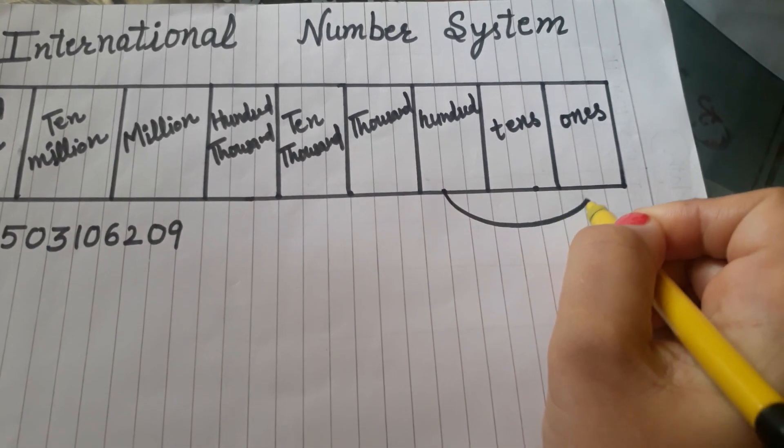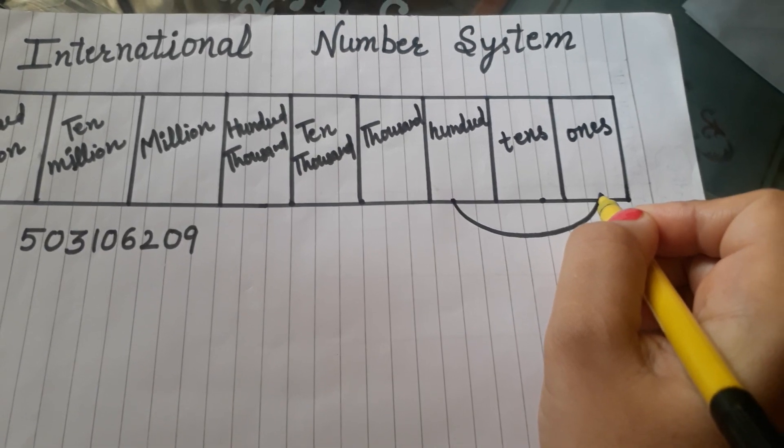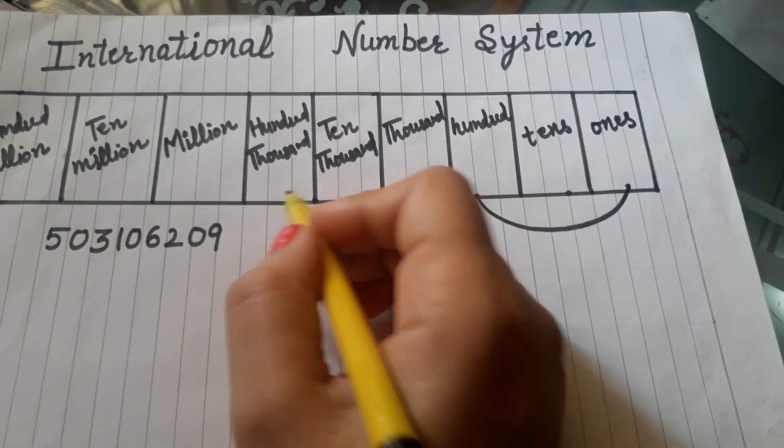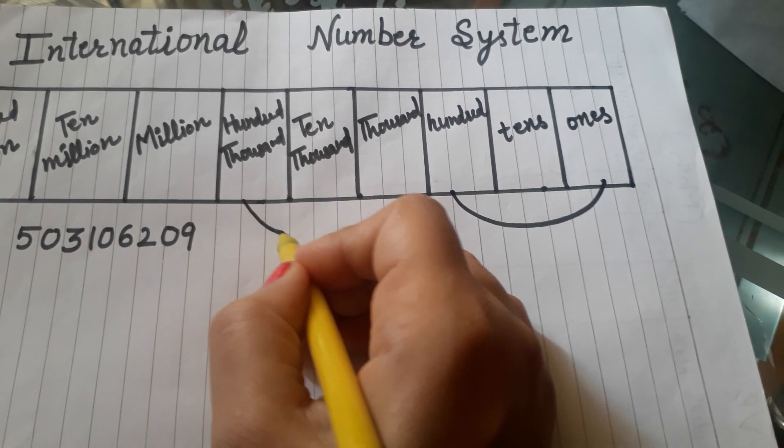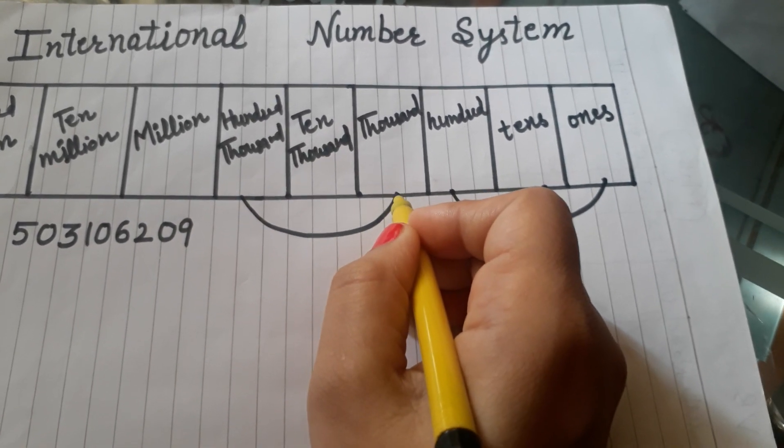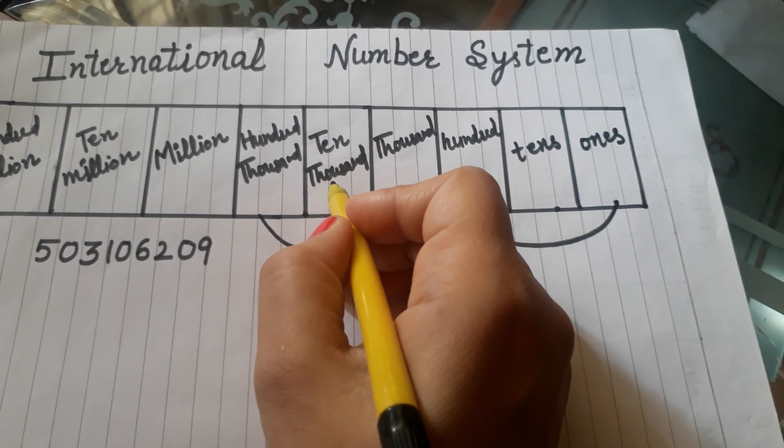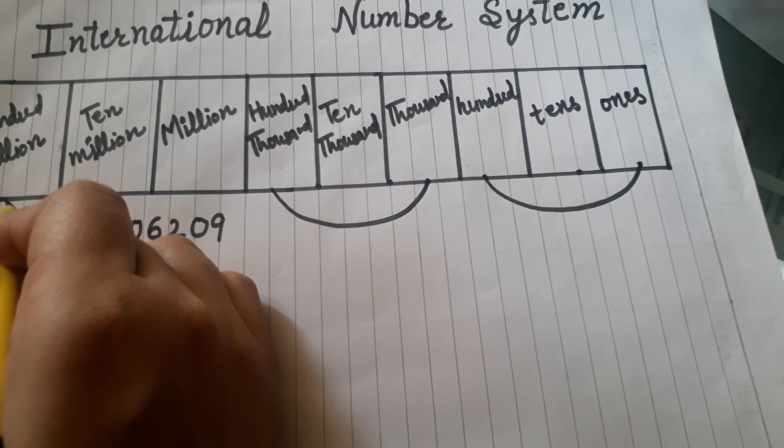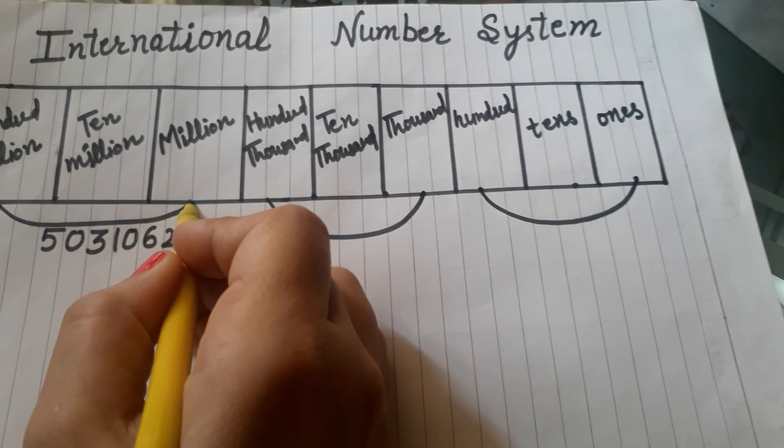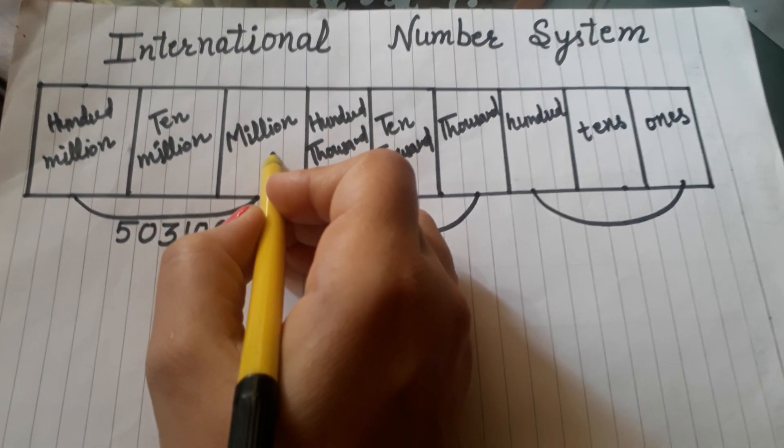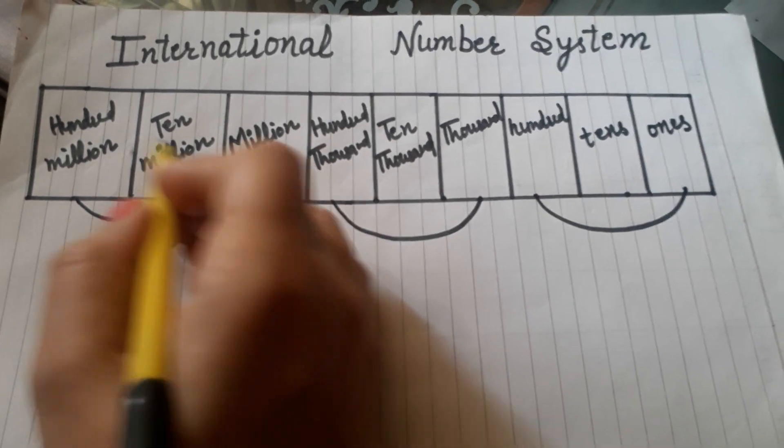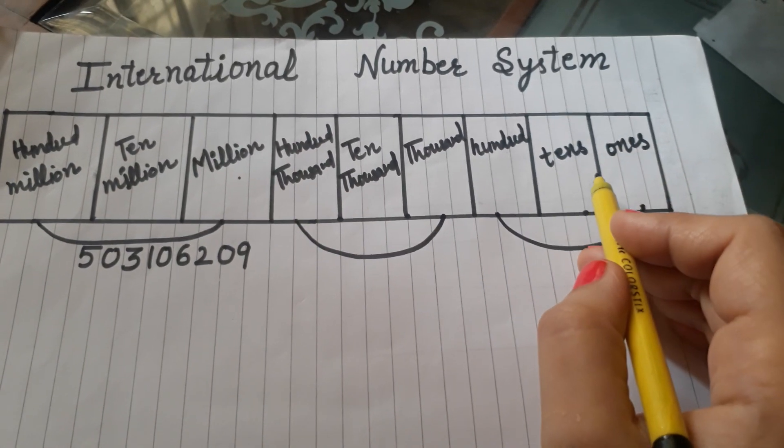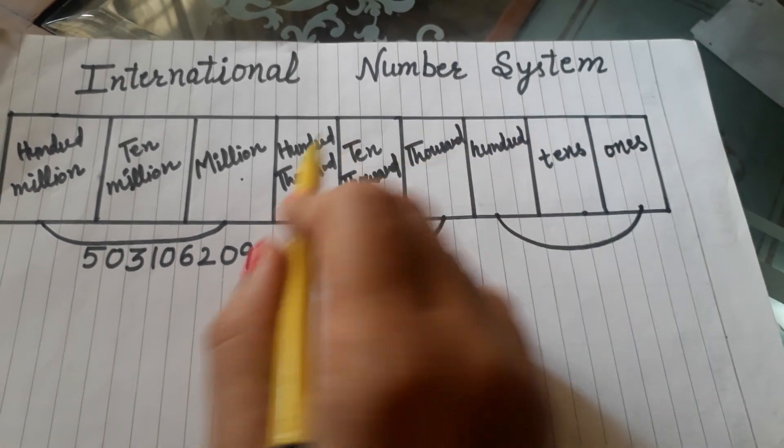The first family is the ones family, in which ones, tens and hundreds come. The next family is the thousands family: thousands, ten thousands and hundred thousands. And the last family is the millions family: millions, ten millions and hundred millions. So there are 3 families - ones, thousands, and millions.